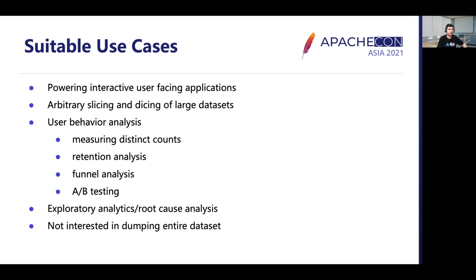Here are some suitable use cases for Apache Druid. One key use case is powering interactive user-facing applications requiring high performance queries and data freshness, with arbitrary slicing and dicing of large data sets without needing pre-canned drill-downs. Another is user behavior analysis such as measuring distinct counts, retention analysis, funnel analysis, or A/B testing. Exploratory analysis and root cause analysis is also a key use case — when some issue occurs in your system you can query operational data ingested into Druid in real time to determine what is happening and which service is broken.